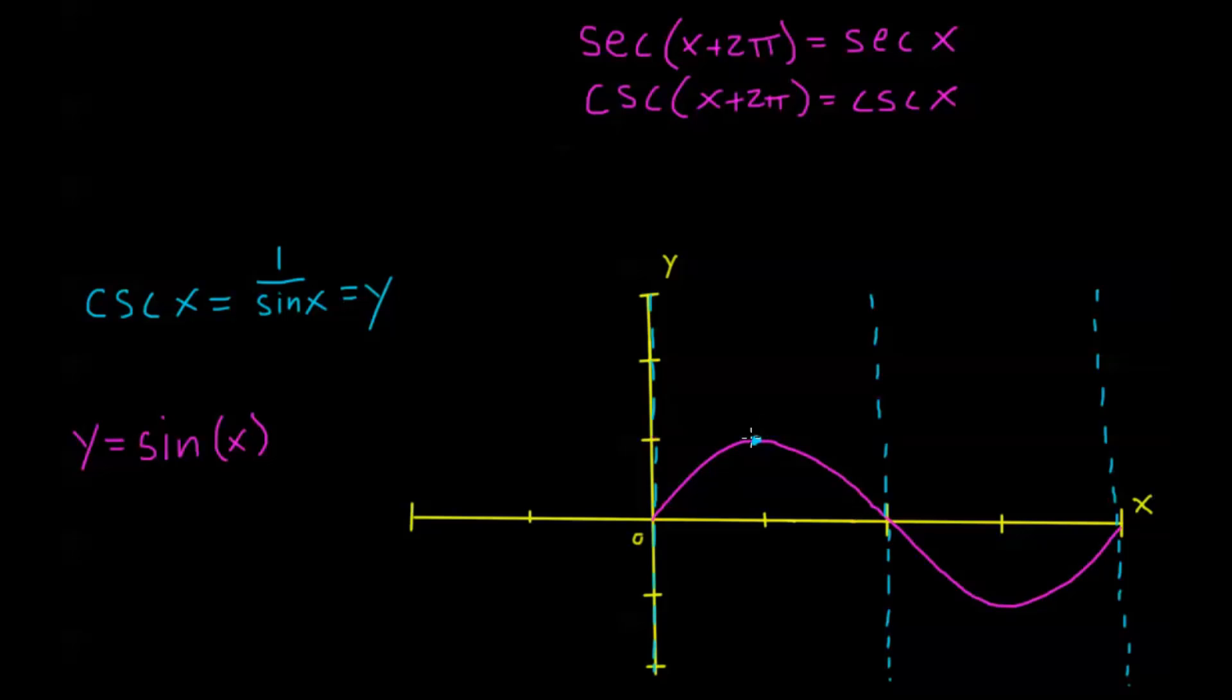But cosecant is different in that we see here that as sine gets smaller to the left and to the right of this point, cosecant is going to get larger. Sine is going to be smaller and smaller, so 1 over a number that gets smaller is a number that's getting bigger and bigger. We saw that in our last video looking at tangent and cotangent.